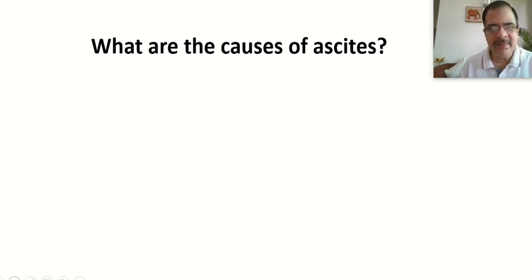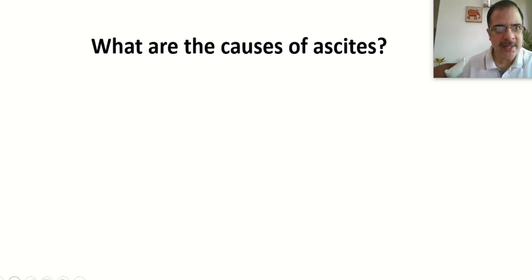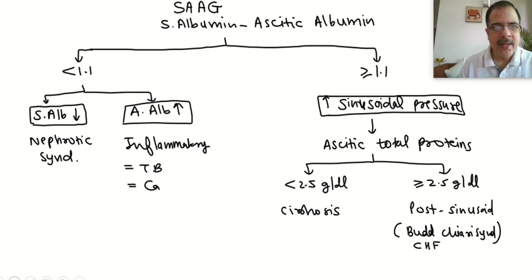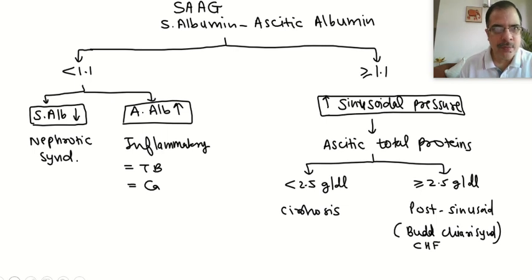The next viva question is: what are the causes of ascites? This is a very important concept with many misconceptions. Causes are classified not as exudative or transudative, but according to the SAAG — Serum Albumin minus Ascitic Albumin. If this gradient is less than 1.1, it could be because serum albumin is low, as in nephrotic syndrome, or because ascitic fluid albumin is high due to inflammatory conditions of the peritoneum causing albumin leakage into the peritoneal space.